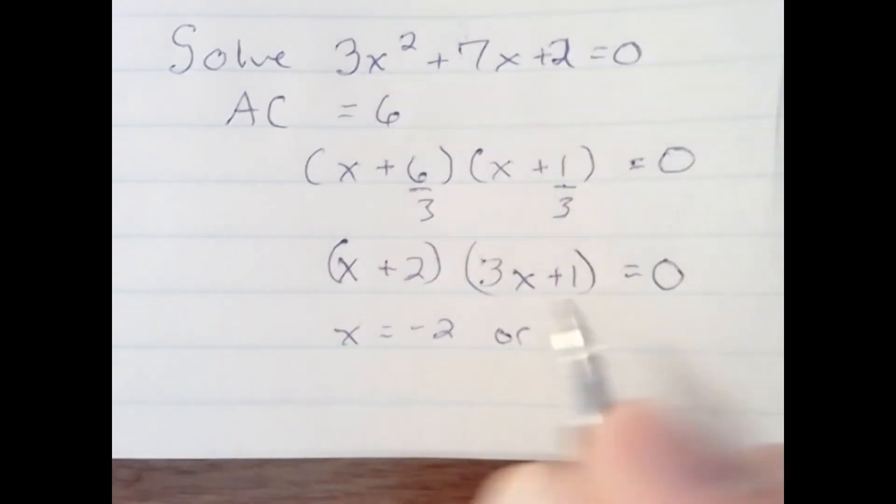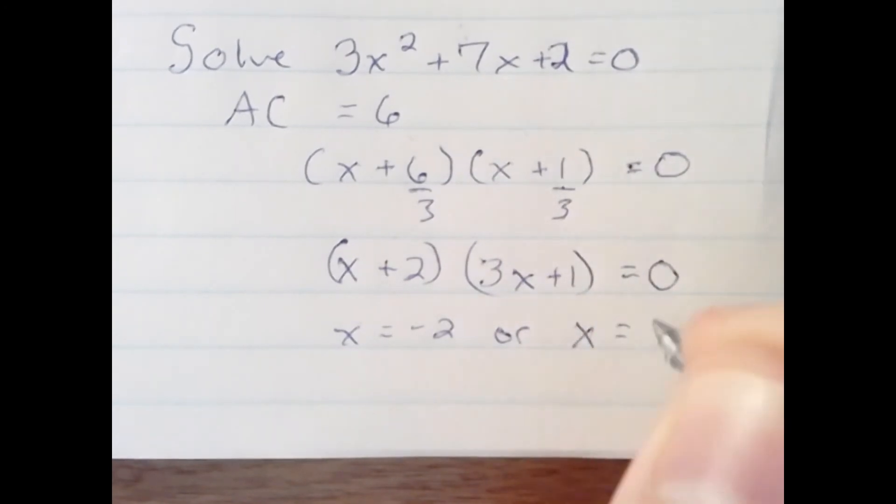The other is 3x plus 1 equals 0, so subtract 1, divide by 3. x could equal negative 1 third, and those are our two solutions.